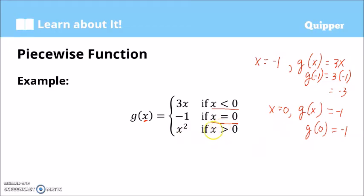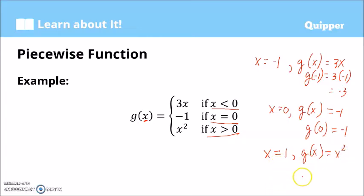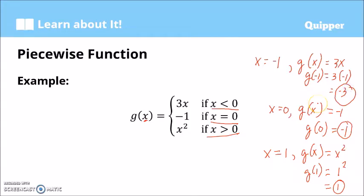The third expression: g(x) equals x squared if x is greater than zero. So if we have x equals positive 1, which is greater than zero, then g(x) must be x squared. Therefore, g(1) equals 1 squared, which equals 1. So we now have three values for our g(x) corresponding to the three different expressions.